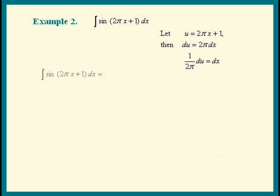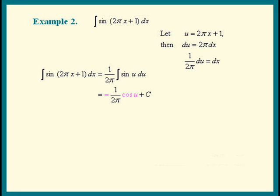So let's take the given integral and substitute the u's in. We have the integral of sine of u, and dx is — pulling out the 1 over 2π as a constant factor — times du. Now applying the formula, the integral of sine u du is negative cosine u plus c. We now have negative 1 over 2π times cosine of u plus c. Putting the x's back in, our answer is negative 1 over 2π times cosine of 2πx plus 1, plus c.